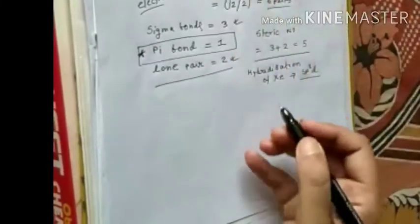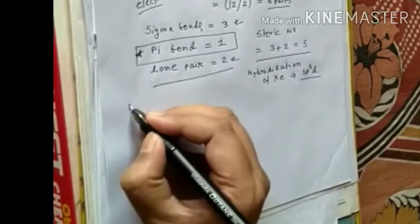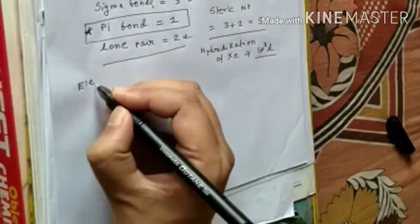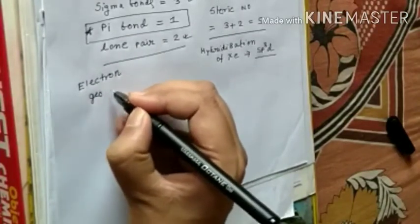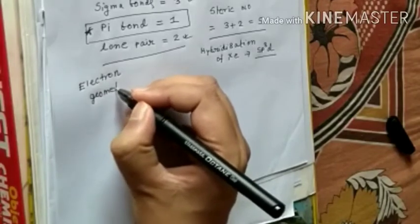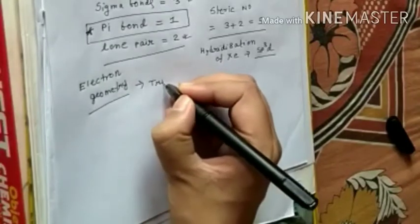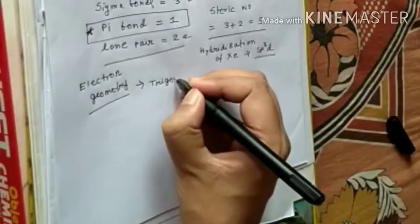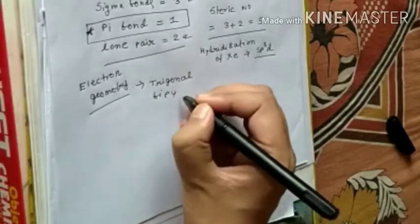And the electron geometry will be trigonal bipyramidal.